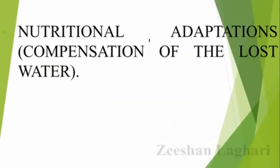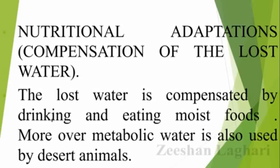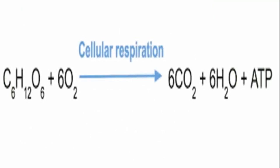Now let's look at nutritional adaptations — how to compensate for lost water and replenish it. The lost water is compensated by desert animals using metabolic water, which is produced through cellular respiration — the breakdown of glucose in the presence of oxygen during aerobic respiration.